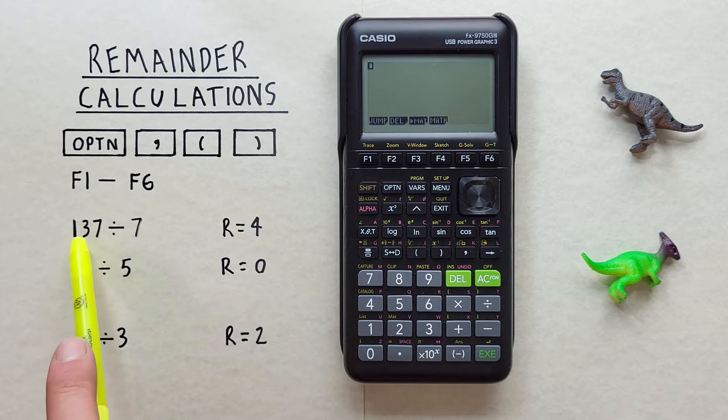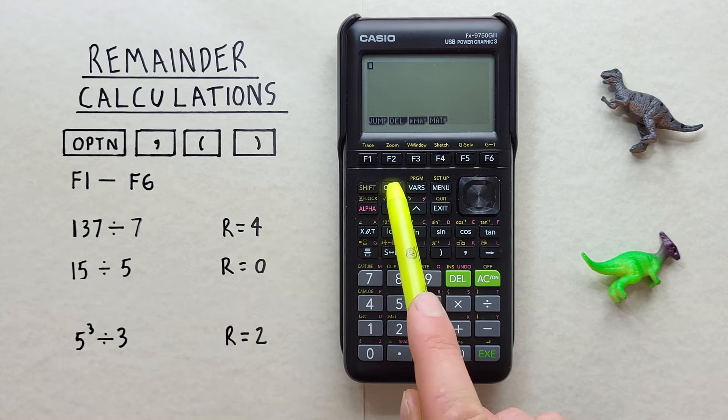Let's say we were given 137 divided by 7 and wanted to know the remainder. To do that we start by going to the modulus function or modulus app.